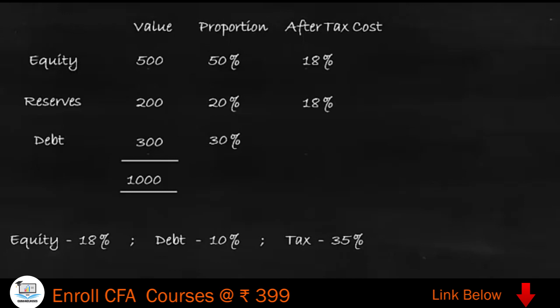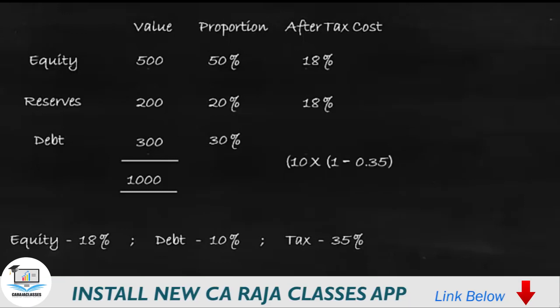When it comes to debt, interest is paid before tax. Because of paying interest, the company is going to save something on tax since expenses have come down due to interest. So there is a tax saving to the extent of 35 percent on the interest. If interest is 10 percent and tax is 35 percent, the effective interest cost is 65 percent of the interest — that is, 10 multiplied by (1 minus tax rate). So if the interest rate is 10 percent and the tax rate is 35 percent, the after-tax interest rate is 6.5 percent.